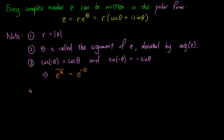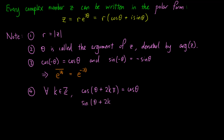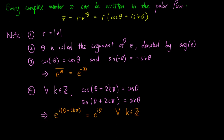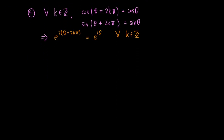We also observe that for all integers k, cos(θ + 2kπ) equals cos θ, and sin(θ + 2kπ) equals sin θ. So e to the i times (θ + 2kπ) equals e to the iθ for all integers k.